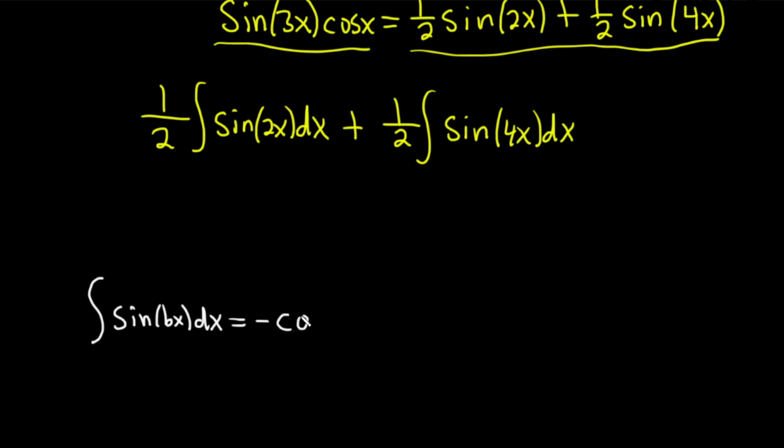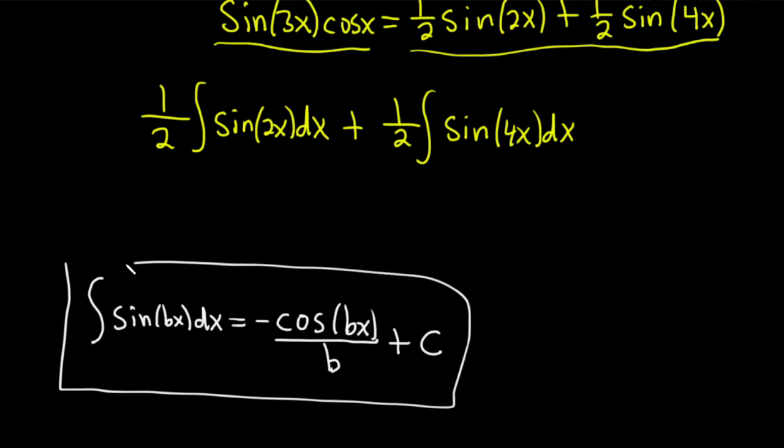This is actually negative cosine of bx, and you divide by b, assuming, of course, b is not 0. This formula is very powerful. And you can prove it just by letting u be bx and going from there.